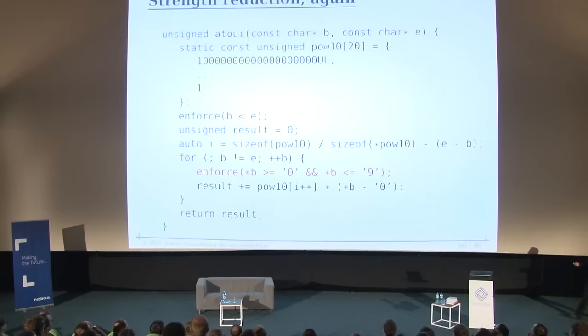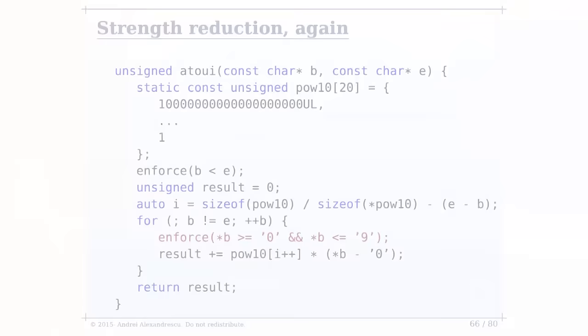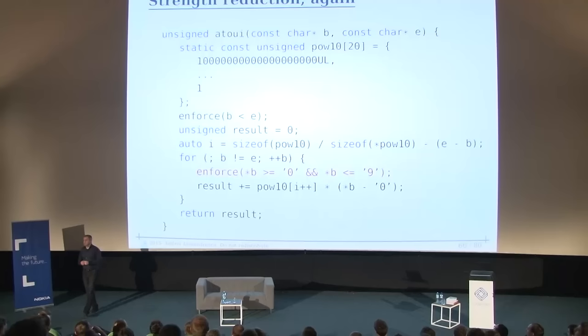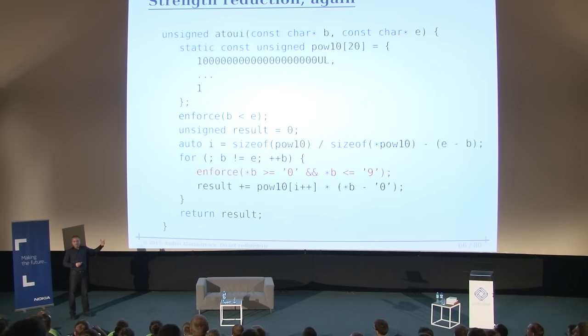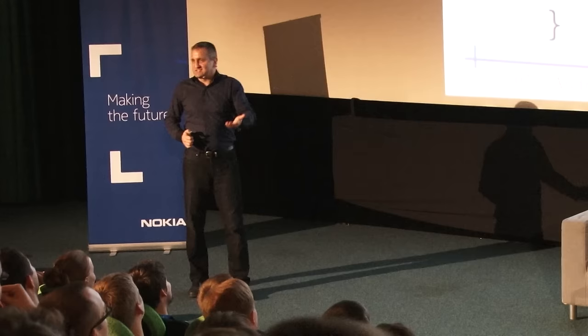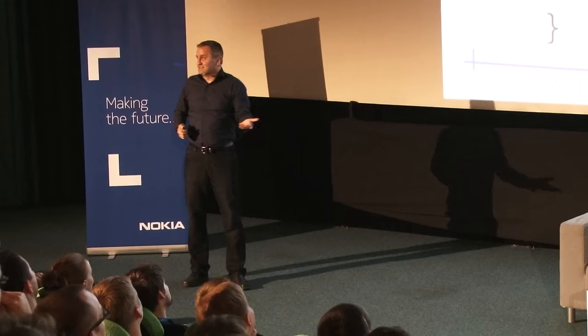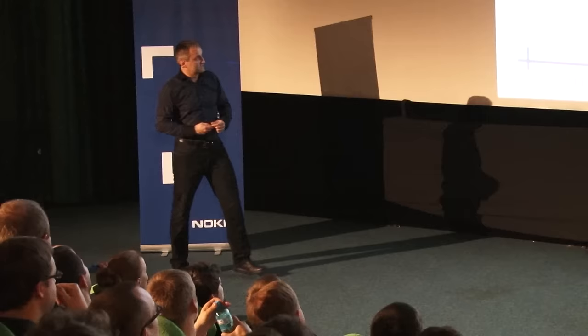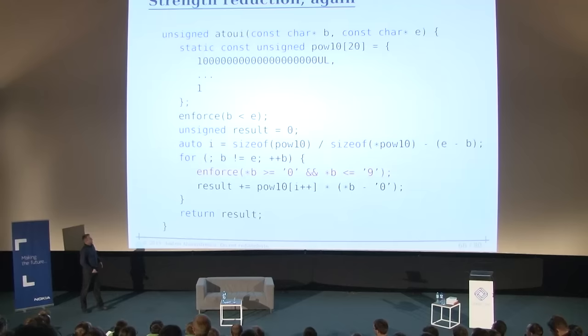Associative means parallelizable. Getting back to strength reduction — let's make this even better. Does anyone know what the 'enforce' function does? It's like assert, but it always asserts, not only at debug time — it throws an exception if the condition is not met. Its name is 'enforce' but it can't actually enforce truth if the condition is false. That's just semantics — and as people say in political discussions, 'that's just semantics,' which is actually a stupid thing to say, because semantics is everything.